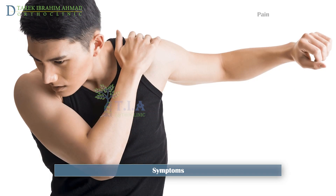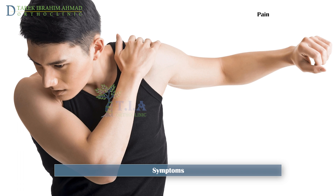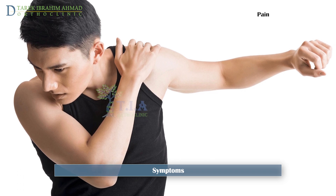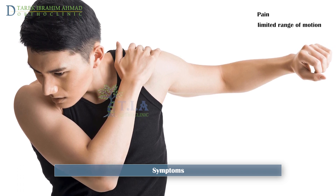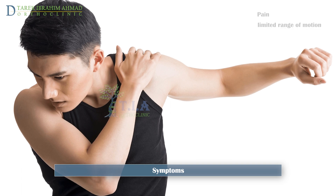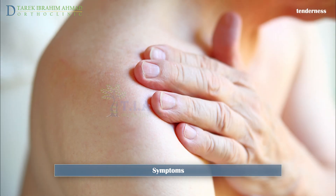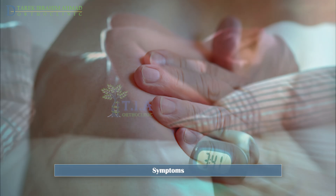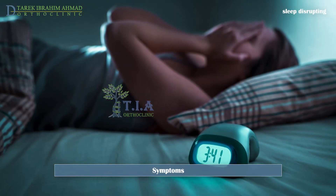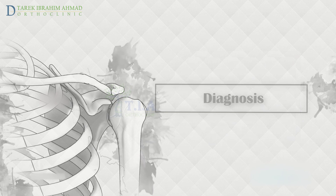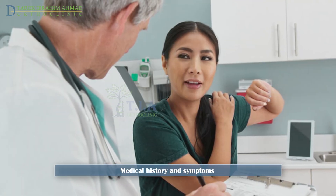About one-third of people with calcific tendonitis don't experience any noticeable symptoms. The most common symptoms are pain related to activity — it may come on suddenly or build up gradually and can limit your range of movement. There is also tenderness to palpation at the involved tendon, and the pain might make it hard to sleep.